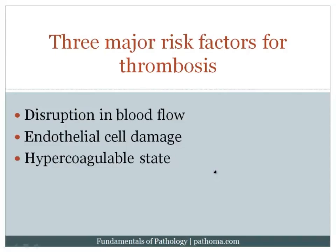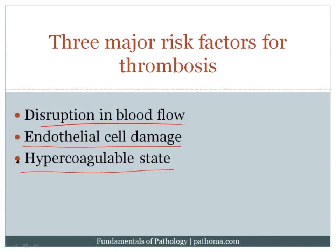There are three major risk factors for thrombosis. If we understand the risk factors, we can understand the disorders that increase the risk for thrombosis. The first is disruption in blood flow, the second is endothelial cell damage, and the third is a hypercoagulable state. These three factors basically form the classically described Virchow's triad. Let's discuss each one individually to highlight how thrombosis might develop.